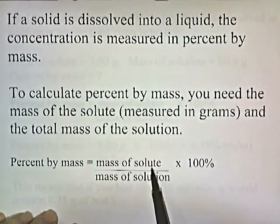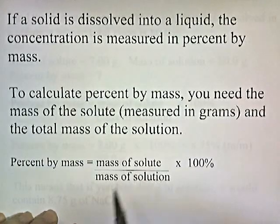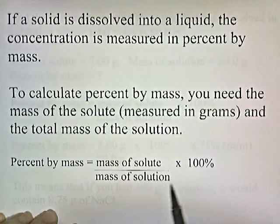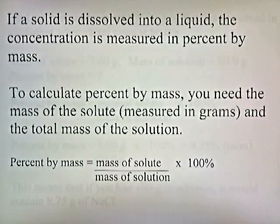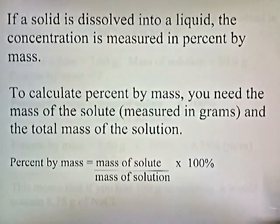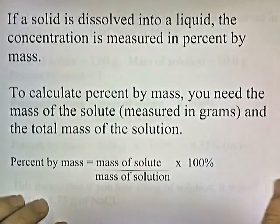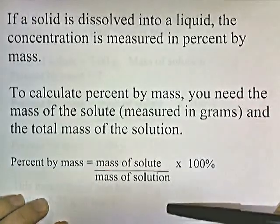The formula for percent by mass is similar to percent by volume: percent by mass equals the mass of the solute divided by the total mass of the solution, times 100%. It's very similar to percent by volume.